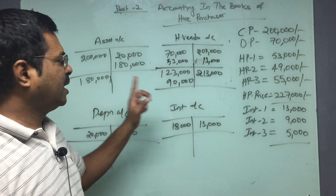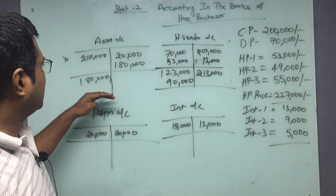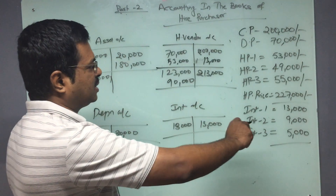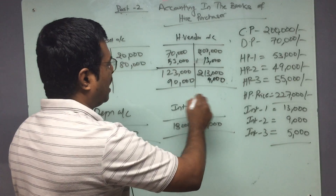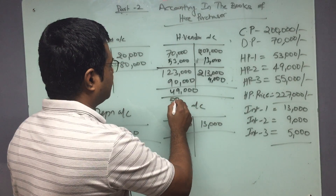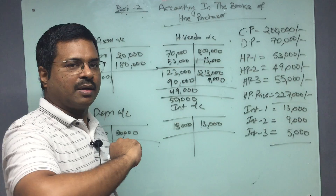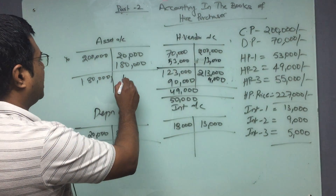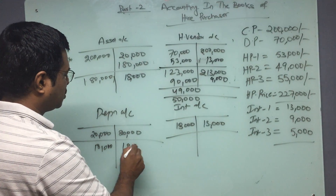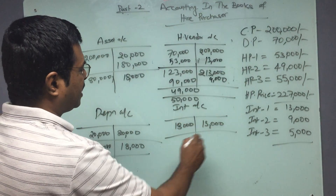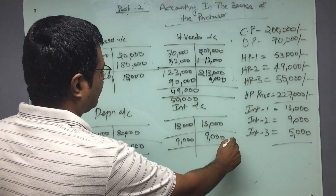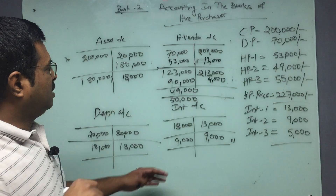Now let's understand year two. 90,000 is due at the beginning of the second year. Next year interest is 9,000 — I will credit that and make a payment of 49,000, so the balance will be 50,000 at the beginning of the third year. Depreciation here is 18,000, which I will transfer to P&L. Interest is 9,000 and I will transfer this to P&L as well — this gets nullified.